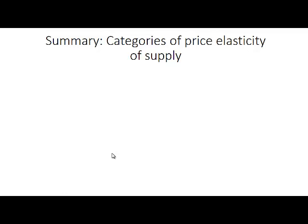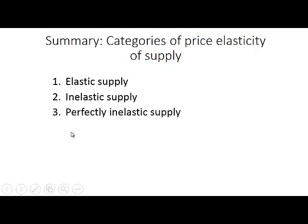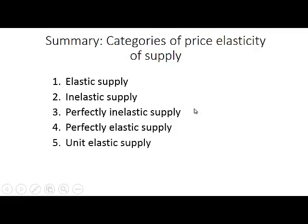To summarize the categories of price elasticity of supply: elastic supply, where the percentage change in quantity is larger than the percentage change in price; inelastic supply, where the percentage change in quantity is smaller than the percentage change in price; perfectly inelastic supply with a vertical supply curve, where there is no change in quantity; perfectly elastic supply, where the percentage change in quantity is infinite; and unit elastic supply, where the percentage change in quantity is exactly equal to the percentage change in price.